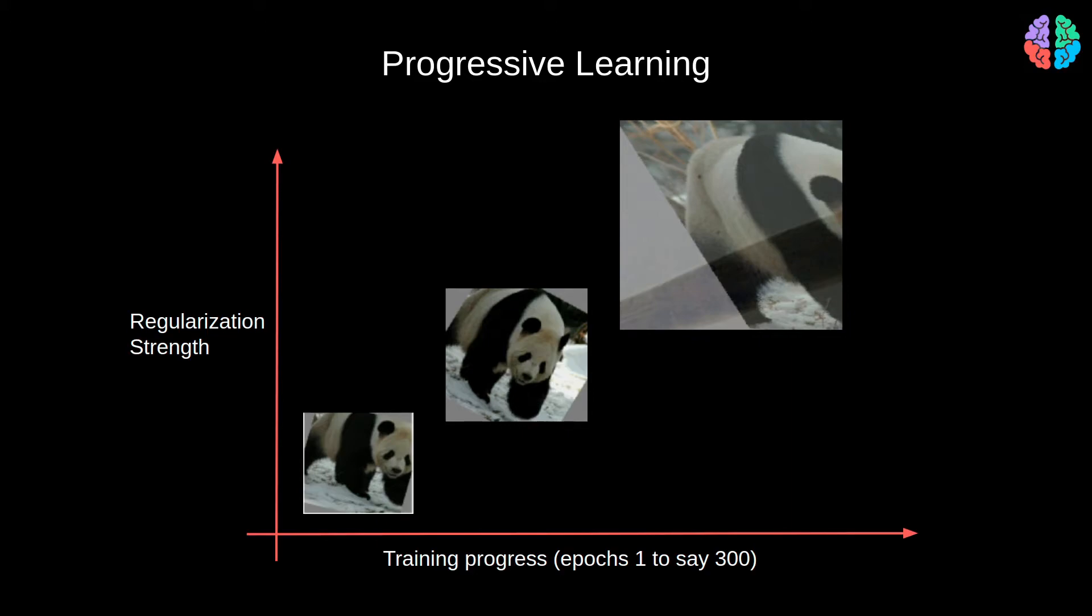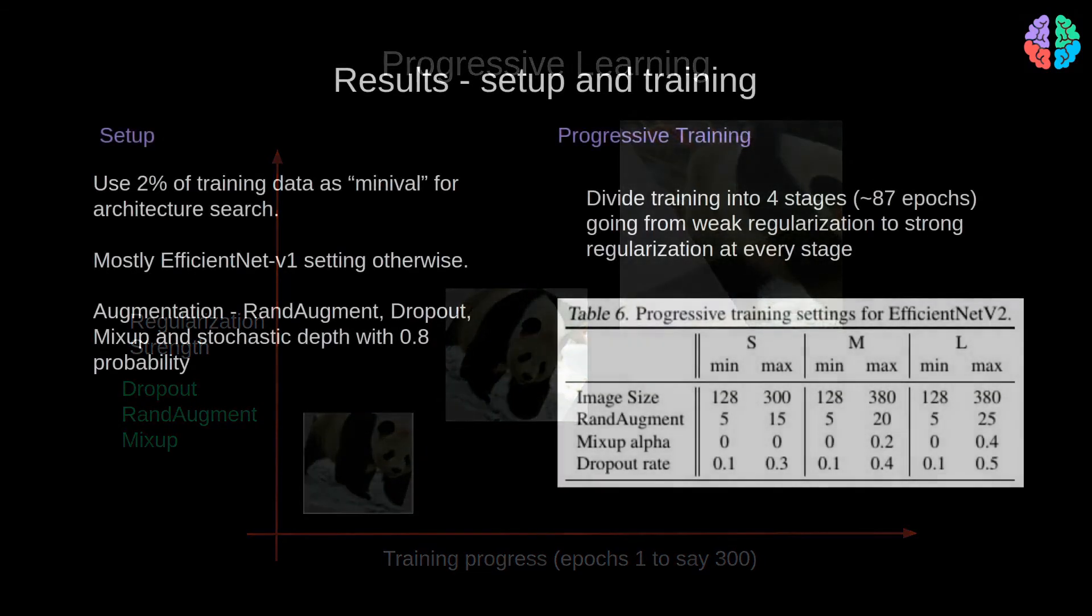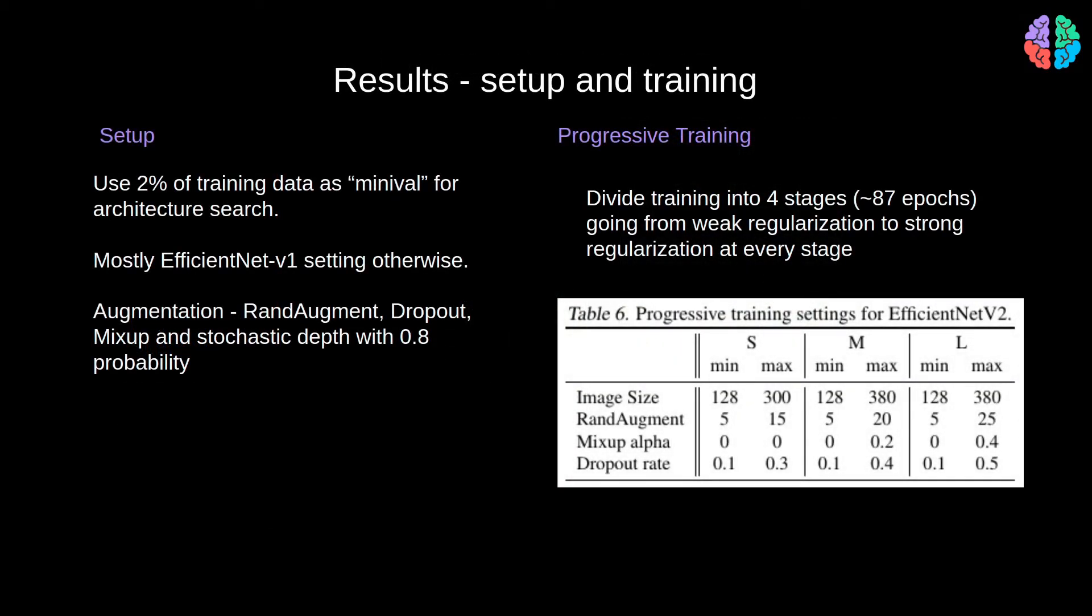So they increase the regularization along with the image size, as training progresses. Practically, they divide the training into stages and for each stage, they pick an image size and regularization and train with those. For simplicity, they just use three regularizations which are dropout, rand augment and mixup.